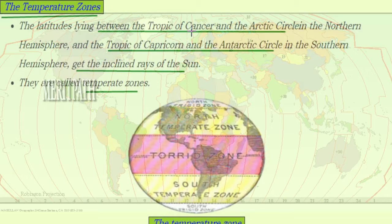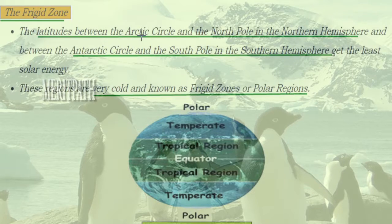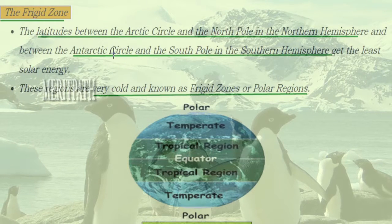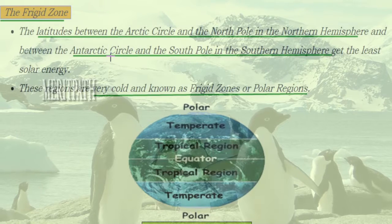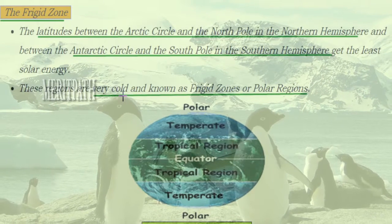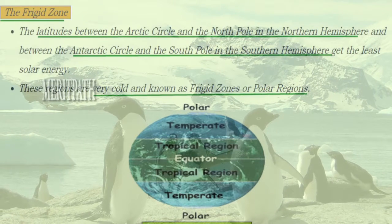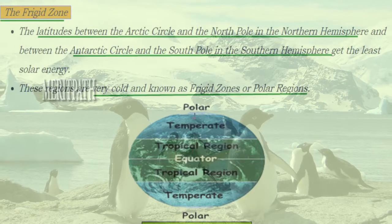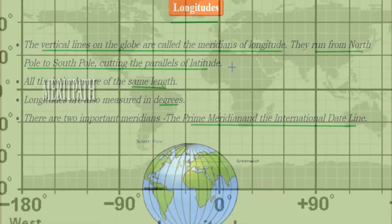The latitudes between the Tropic of Cancer and the Arctic Circle in the north, and between the Tropic of Capricorn and the Antarctic Circle in the south, receive inclined rays of the sun. These regions are known as the Temperate Zones — the North Temperate Zone and the South Temperate Zone. The latitudes between the Arctic Circle and the North Pole, and between the Antarctic Circle and the South Pole, receive the least amount of sun rays and are known as the Frigid Zones or Polar Regions.